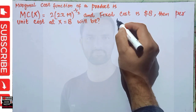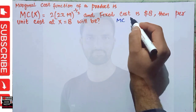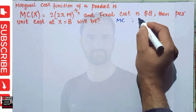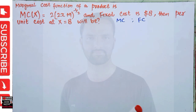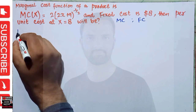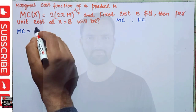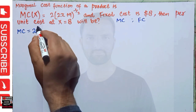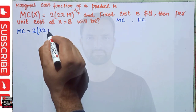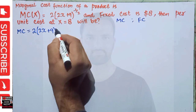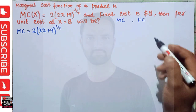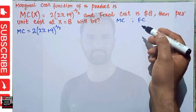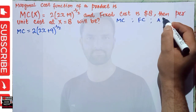So what we are being given here: we are given the marginal cost and we are given the fixed cost. Let's try to solve this. Our marginal cost is given as MC = 2(2x + 9)^(-1/2). This is our marginal cost.